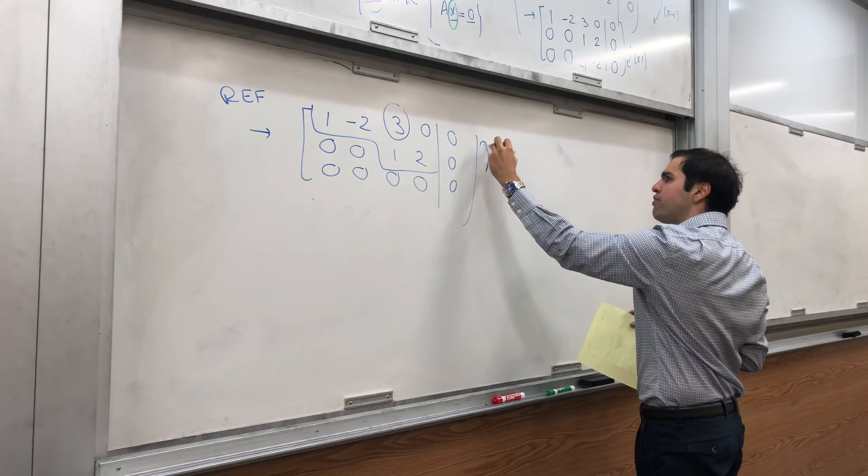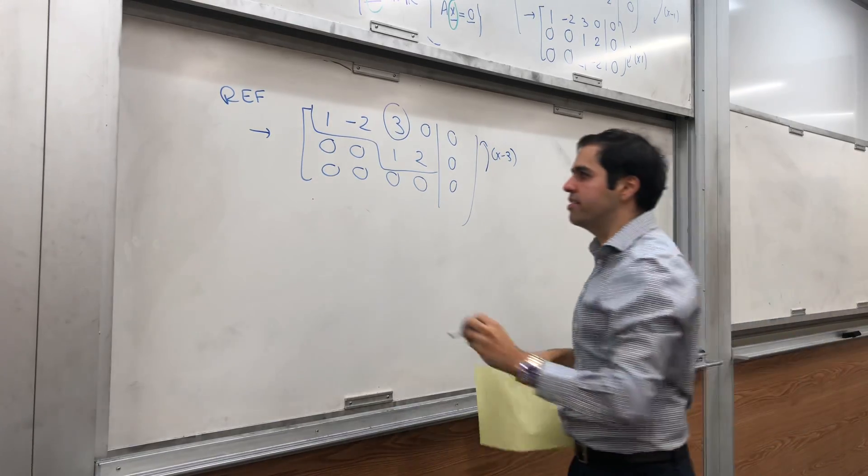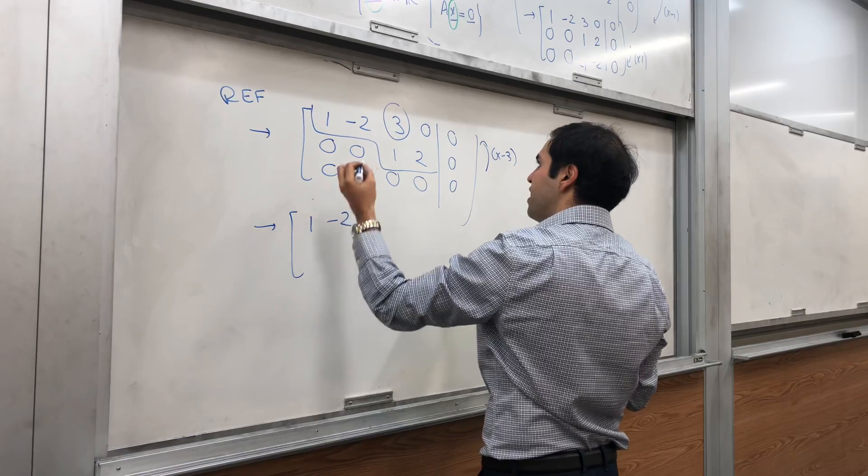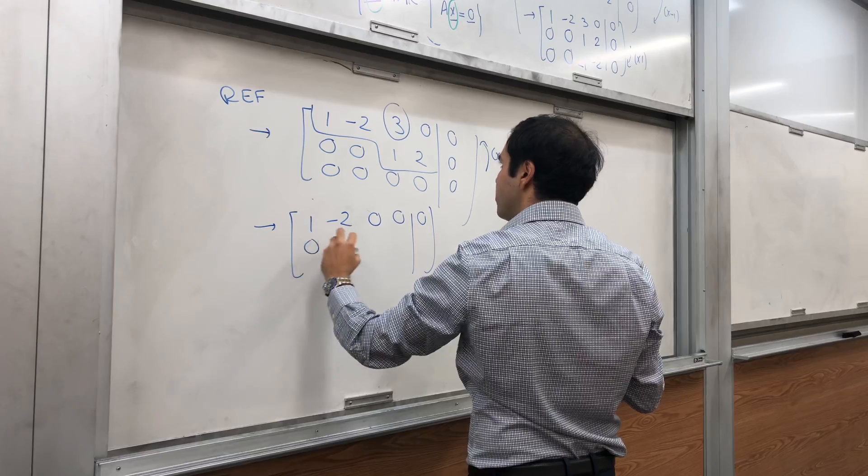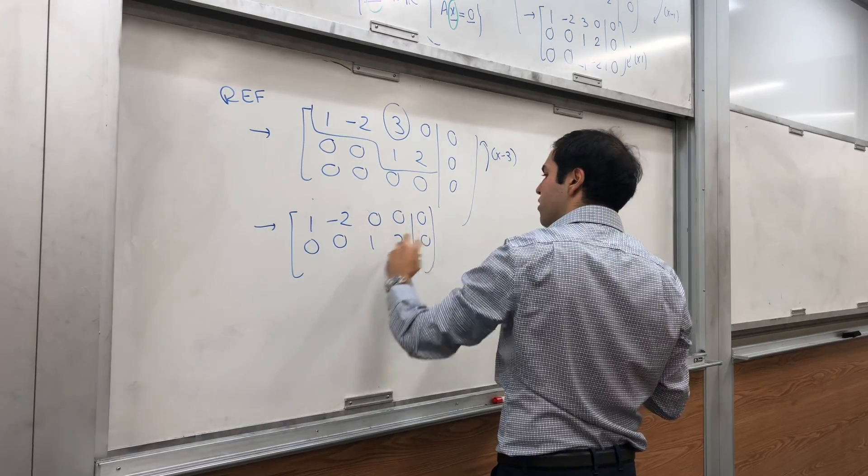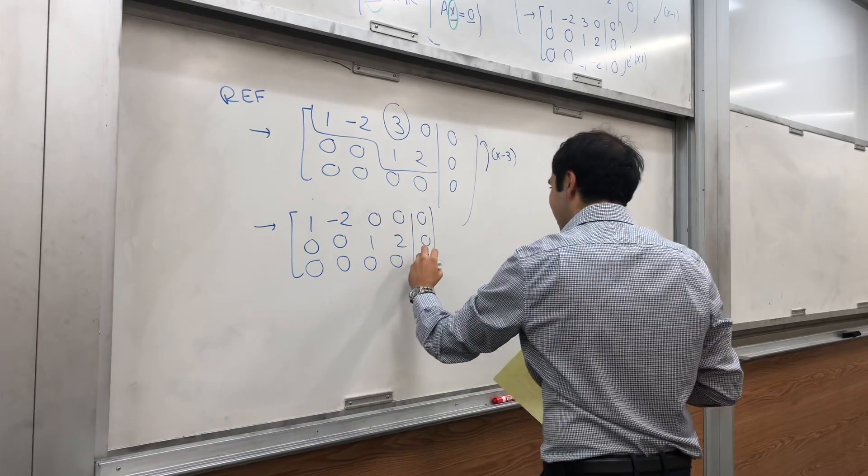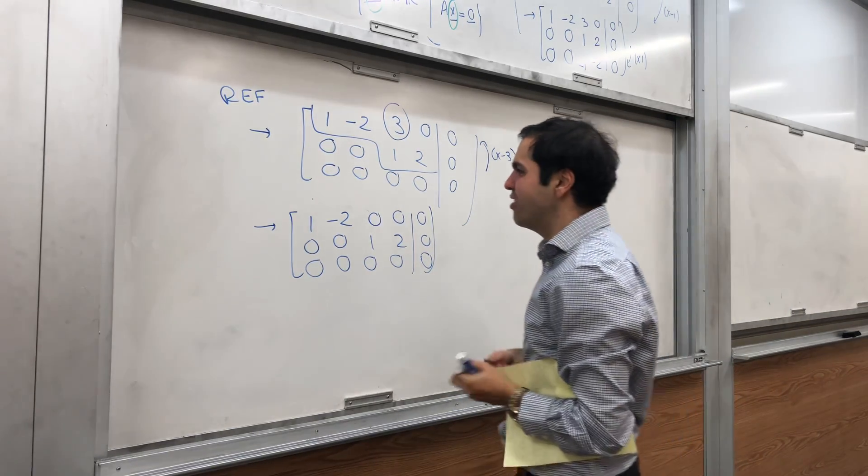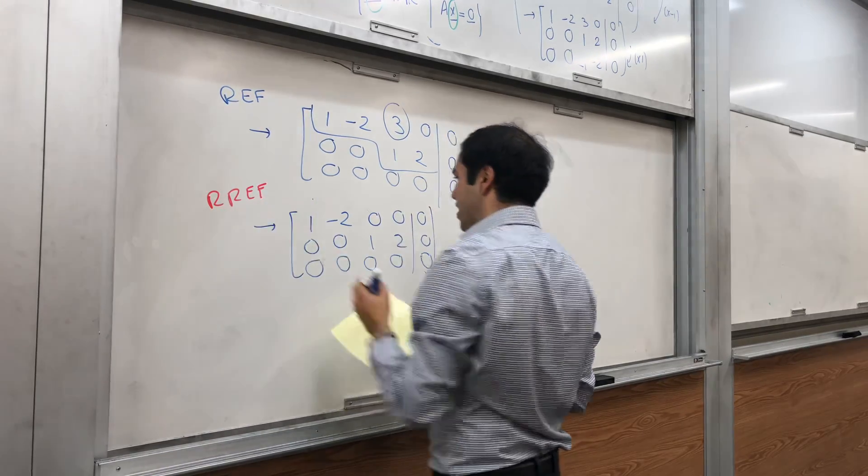So, we have to continue and subtract 3 times the second row from the first row, and we get 1 minus 2, 0, 0, 0, and 0, 0, 1, 2, 0, and 0, 0, 0, 0, 0. Very nice. This is indeed the reduced row echelon form, which means we can find null space of A now.